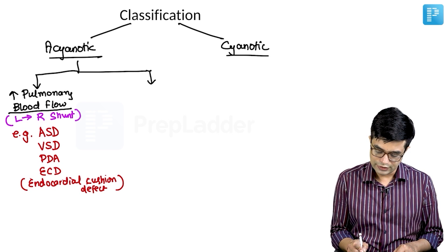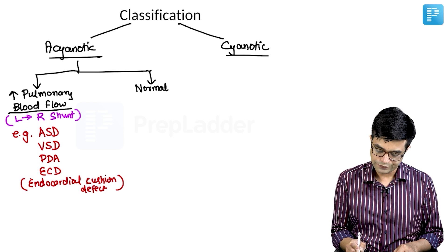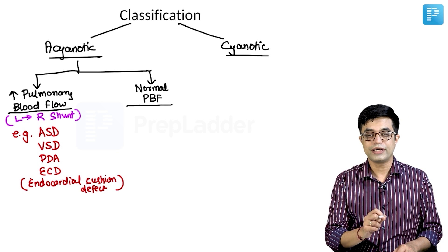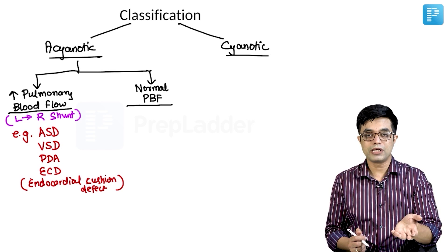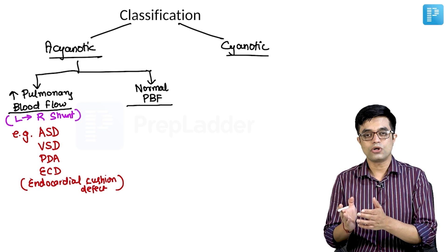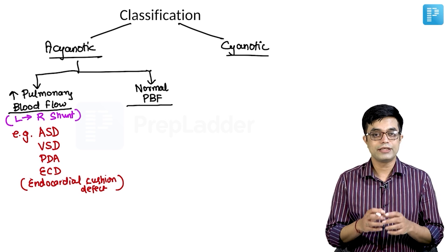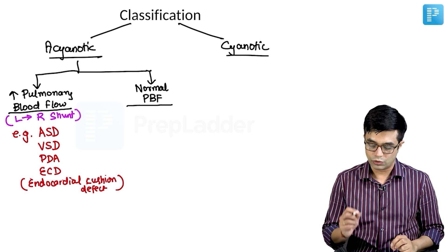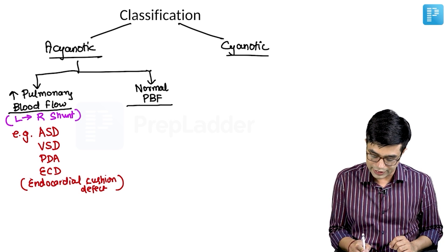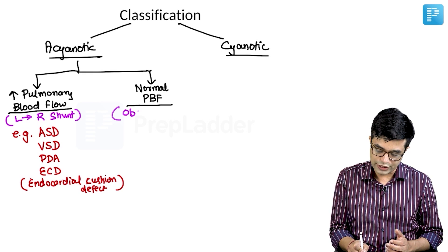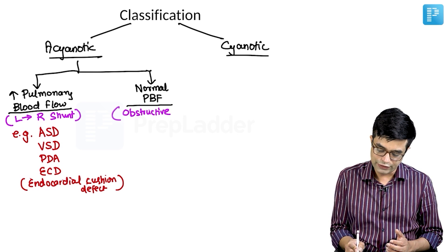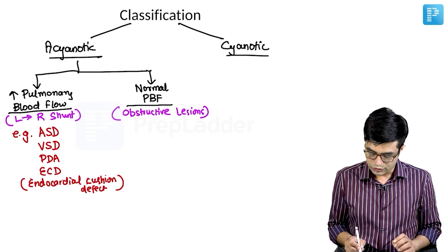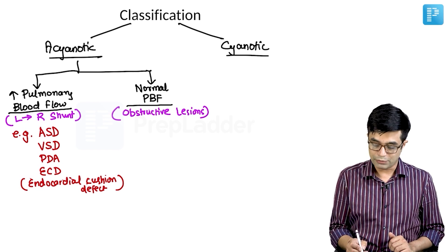Second, we have acyanotic with normal pulmonary blood flow. Now, you need to understand there cannot be any category where the disease is acyanotic and there is decreased pulmonary blood flow because if pulmonary blood flow is less than normal, it means oxygenation will suffer and the patient will become cyanotic. So acyanotic will have only two categories: those with increased pulmonary blood flow and those with normal pulmonary blood flow. Acyanotic with normal pulmonary blood flow are also called obstructive lesions.